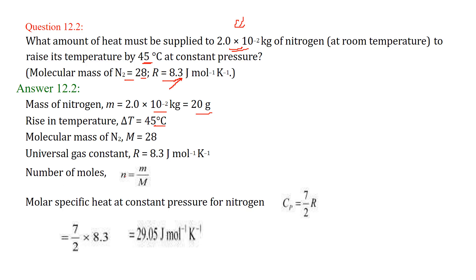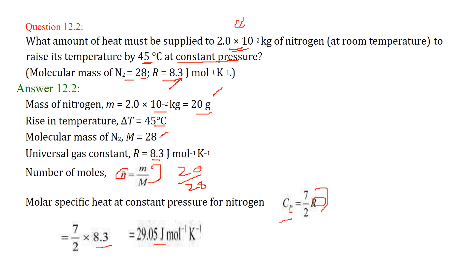The number of moles is simply small m divided by capital M. Small m is 20 grams and capital M is 28, so n equals 20 by 28, which is 0.714. The molar specific heat at constant pressure for nitrogen is Cp equals 7/2 R. Since R is 8.3, we get Cp equals 7/2 × 8.3, which gives 29.05.